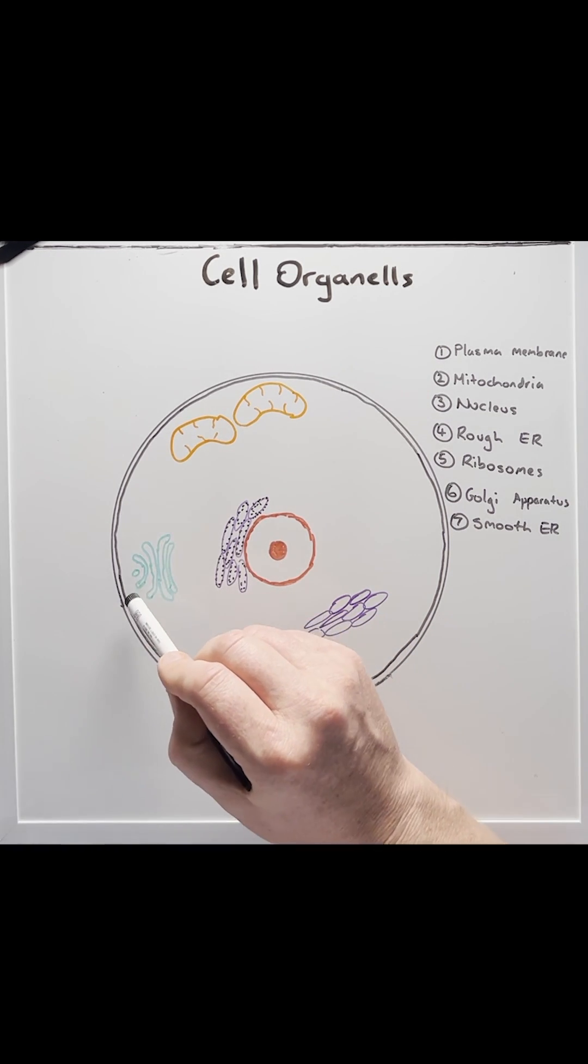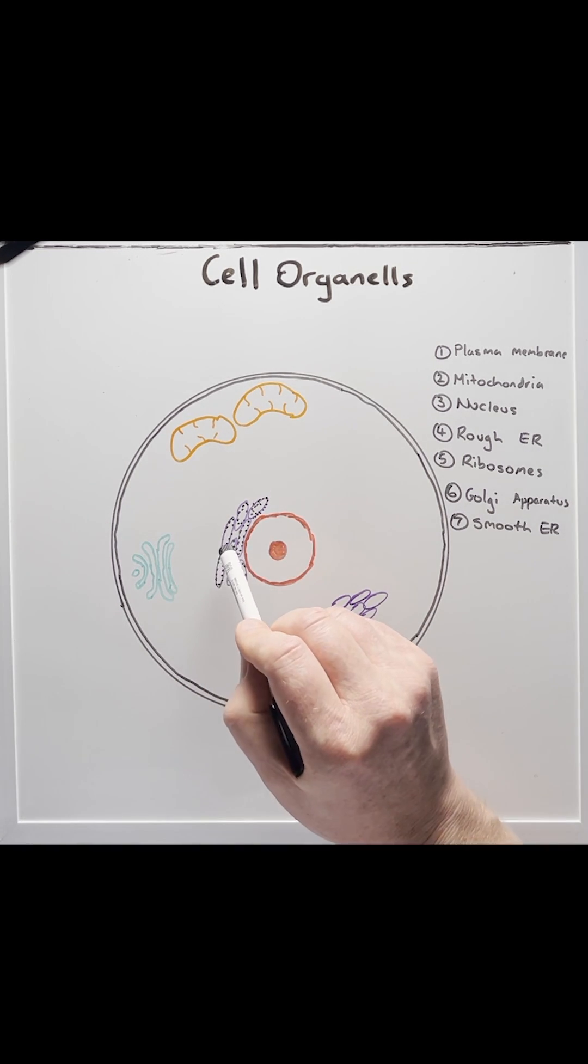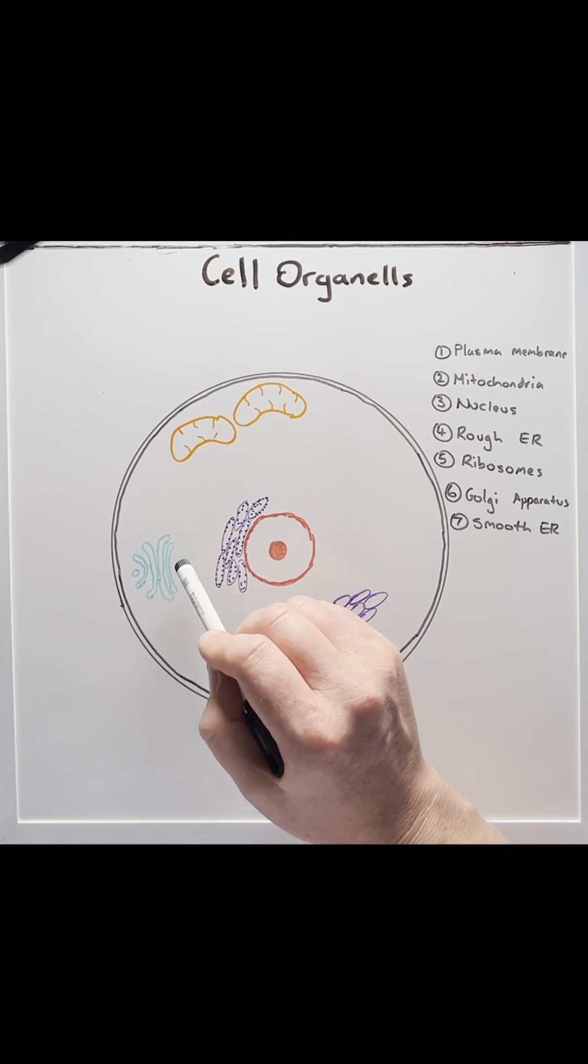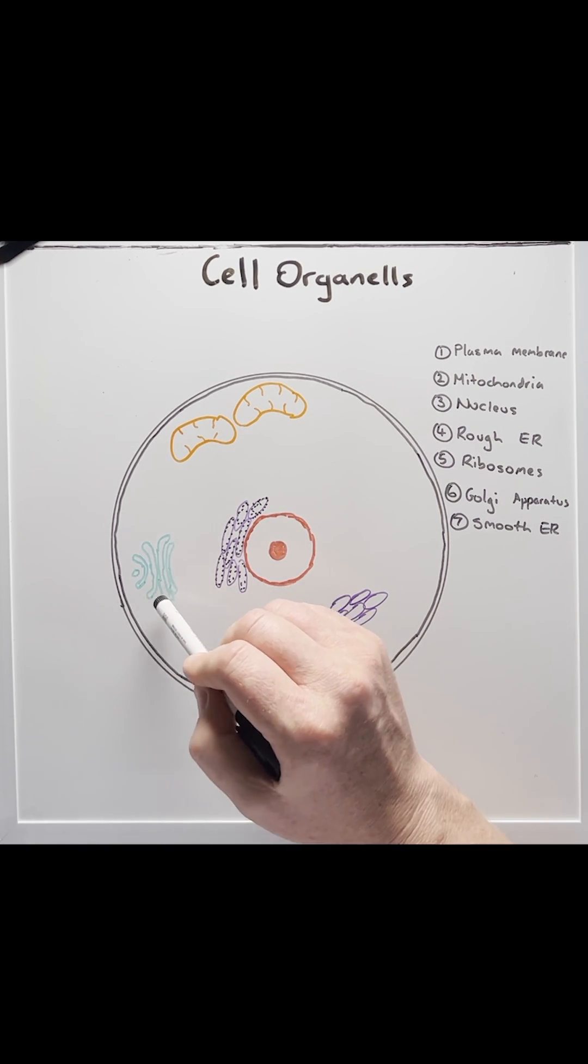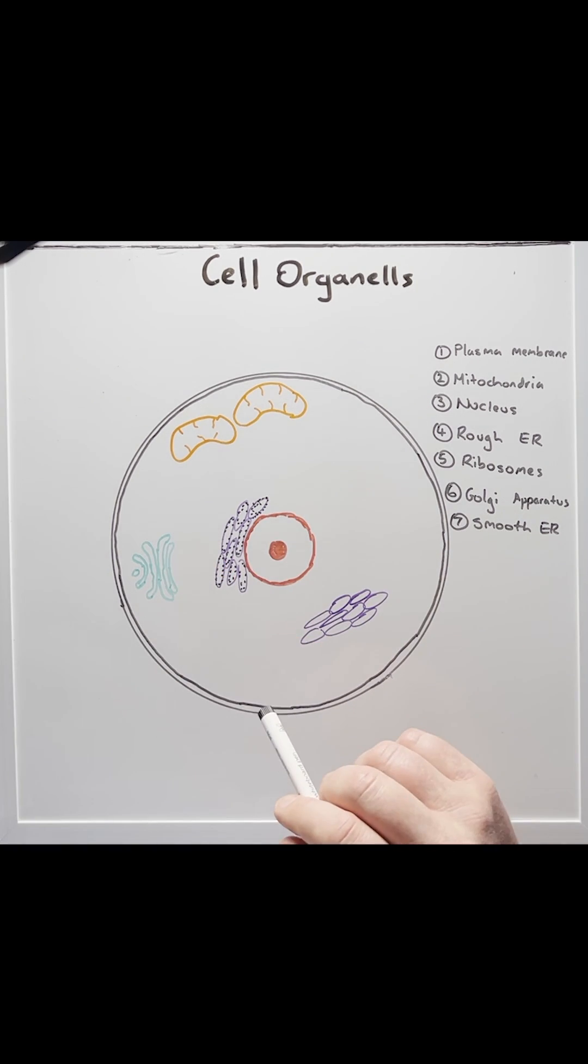Once the proteins are made, they are sent to the Golgi, number six. So immature proteins are packaged up by the Golgi apparatus, which is like a packaging center, slaps on a stamp and sends it outside the cell to somewhere else in the body.